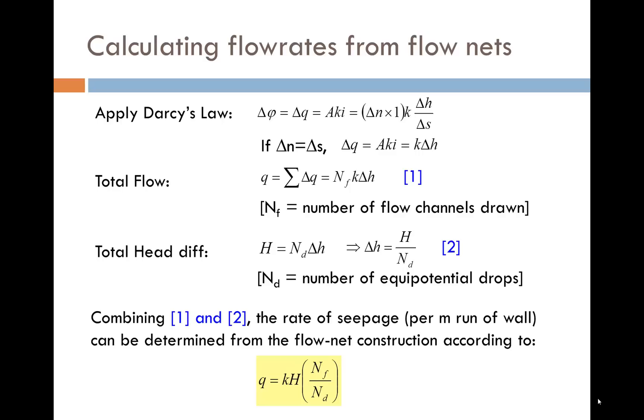The total flow is the sum of the flows through all of the flow channels. If the number of flow channels is NF, then we get that the total flow is NF times K times delta H. The total head difference, H, is the number of equipotential drops, ND, times the head delta H dropped across each. If we rearrange for delta H and substitute it into the equation for flow, we get the equation in yellow, that Q is equal to K times H times NF over ND.